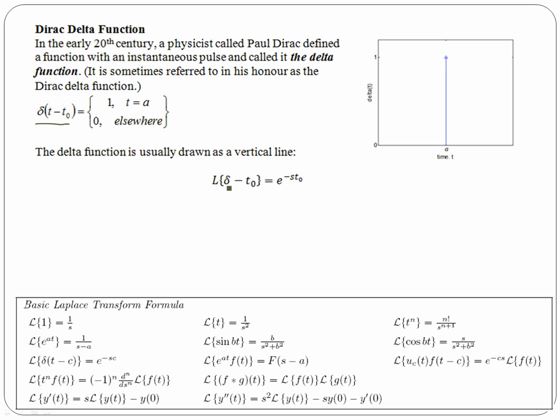And this Laplace transform is not really correctly written. It should be Laplace of delta t minus t naught is equal to e to the negative s t naught. It's given in our transforms down here as Laplace of delta t minus c, where c is a constant just like this t naught is a constant, is equal to e to the negative s c.